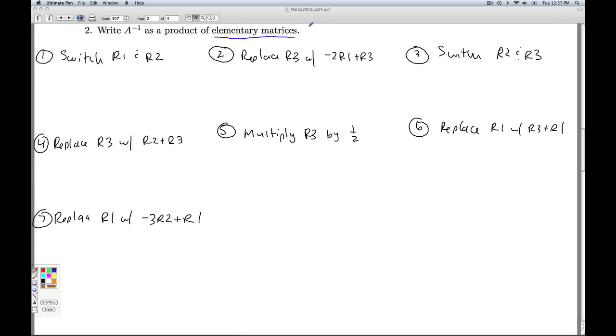Remember, elementary matrices are going to be permutations or slight alterations of the identity matrix, so that when you pre-multiply a matrix by them, multiply the elementary matrix on the left, it's going to do the same row operation we would do on the matrix.